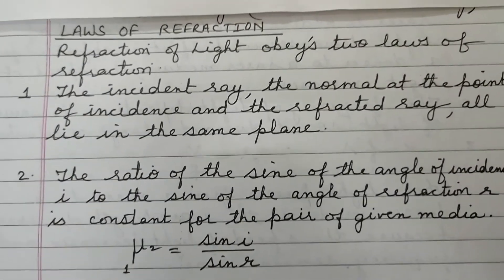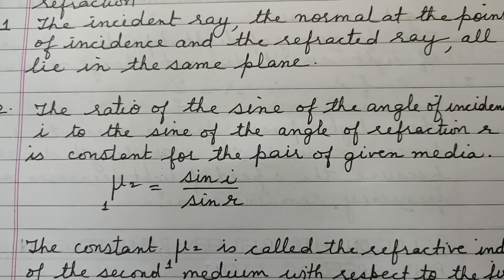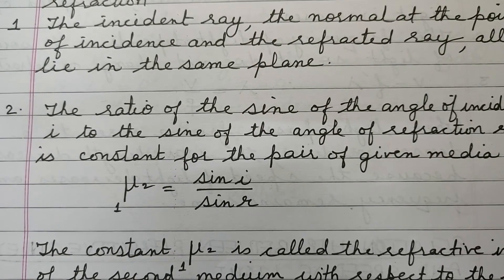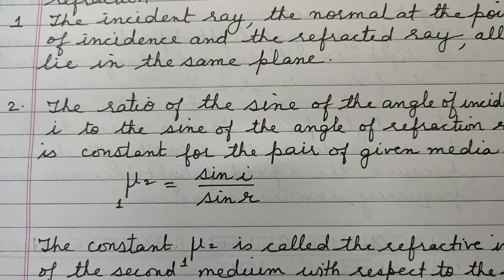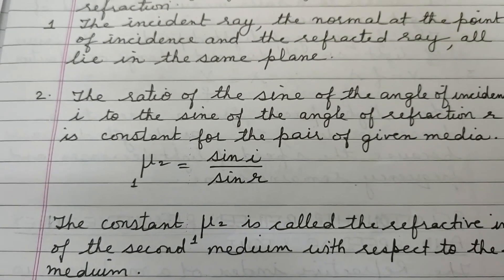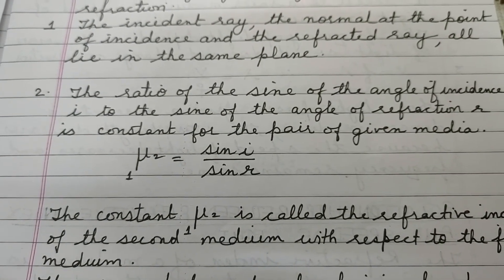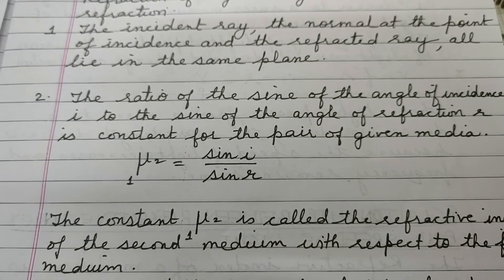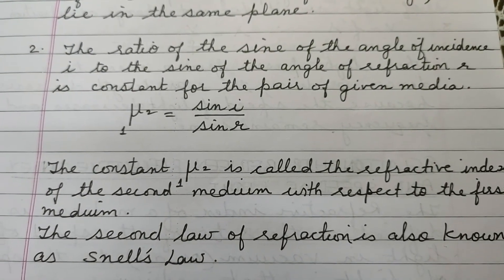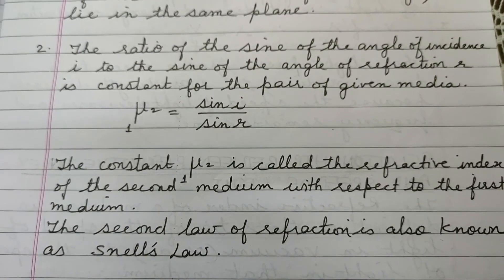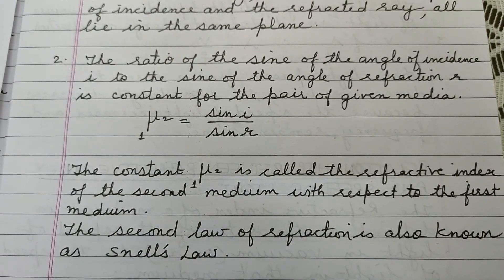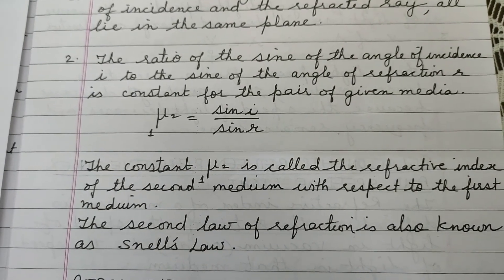The second law states that the ratio of the sine of the angle of incidence to the sine of the angle of refraction is constant for a given pair of media. We can write it as: the refractive index of the second medium with reference to the first medium equals sine i upon sine r. This constant is denoted as mu of the second medium with respect to the first. The second law of refraction is also known as Snell's Law, so if asked to define Snell's Law in your examination, you write only the second law of refraction, not the first.